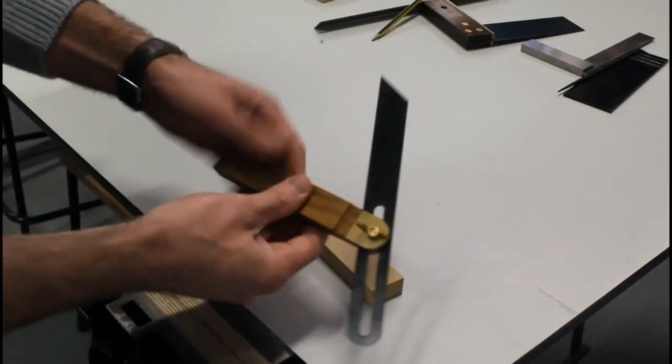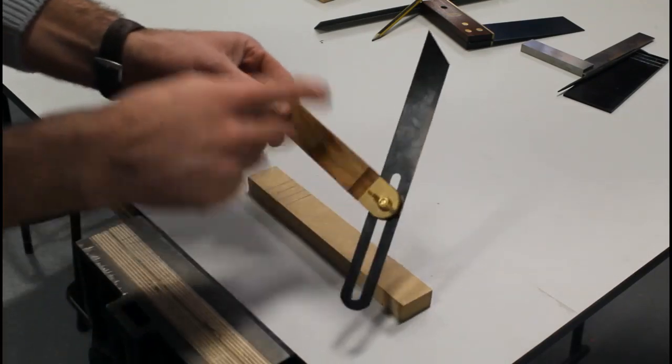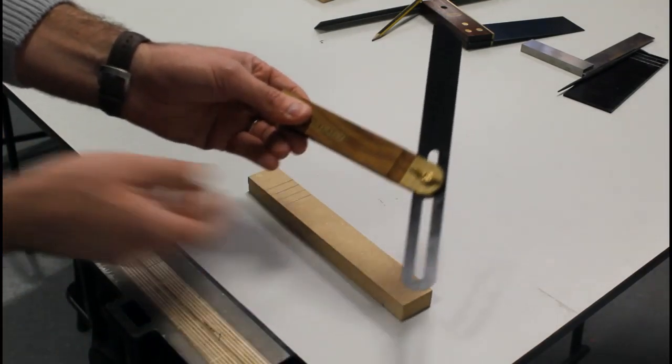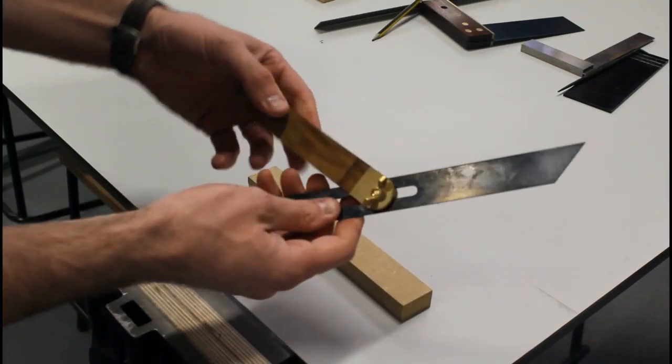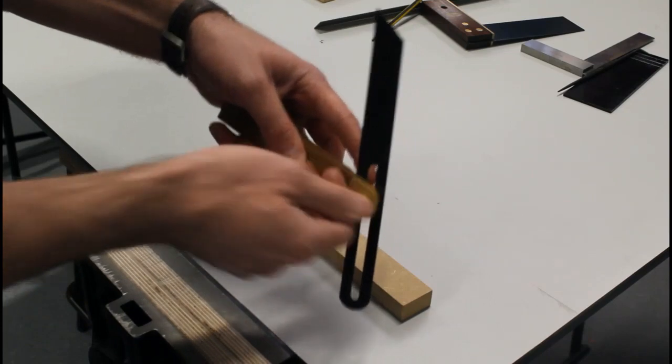I'm going to show you the bevel in action. The bevel is like a tri-square or an engineer's square, and we utilize it. We can set angles on it. So I can set a certain angle like that.